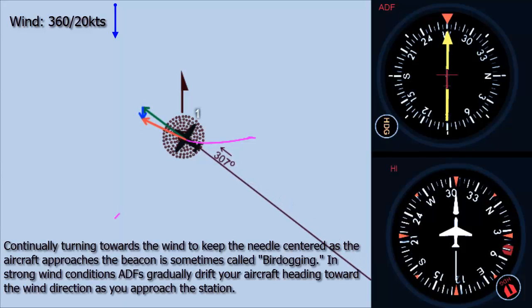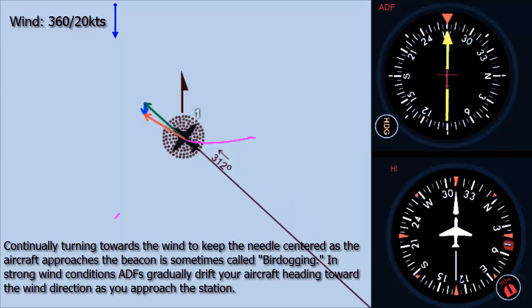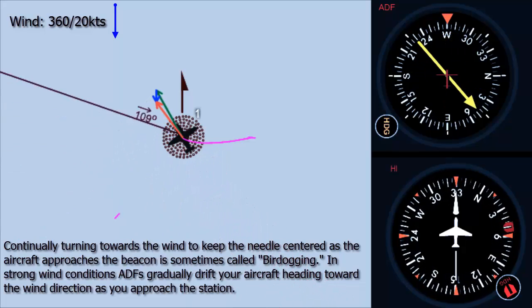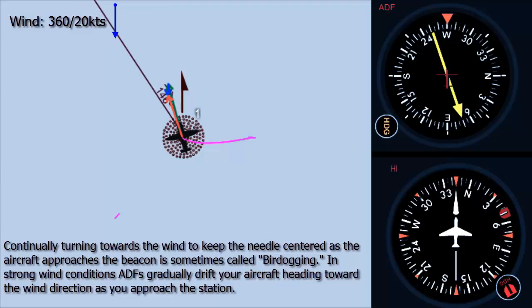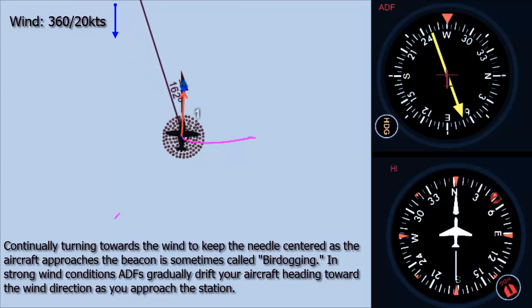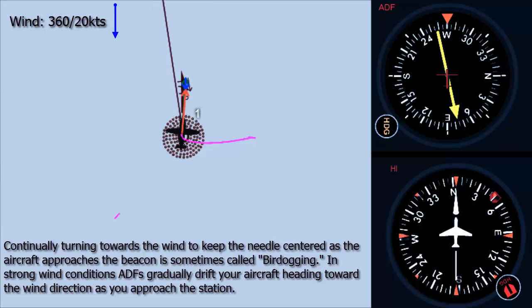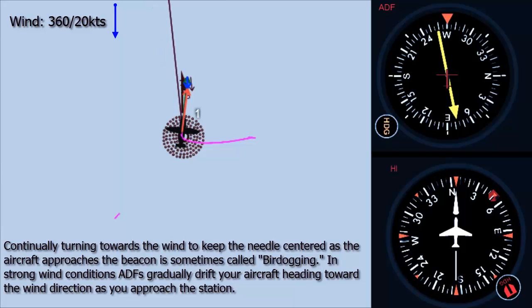Continually turning towards the wind to keep the needle centered as the aircraft approaches the beacon is sometimes called bird-dogging. In strong wind conditions, ADFs gradually drift your aircraft heading toward the wind direction as you approach the station.